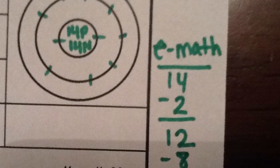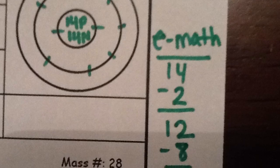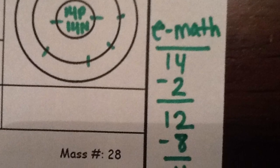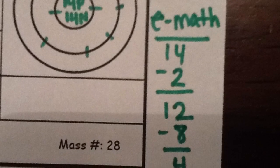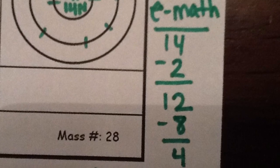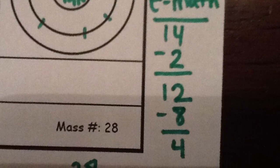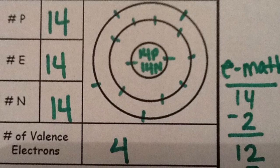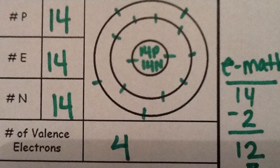Draw 8 electrons in the second energy level. You had 12 electrons, then 8 went to the second energy level, so you have 4 left. Those 4 electrons will go in the third energy level.